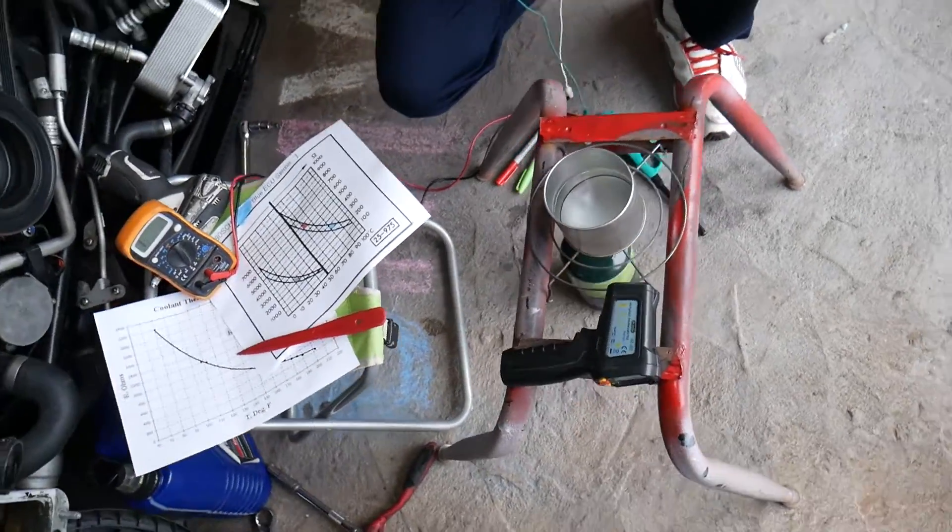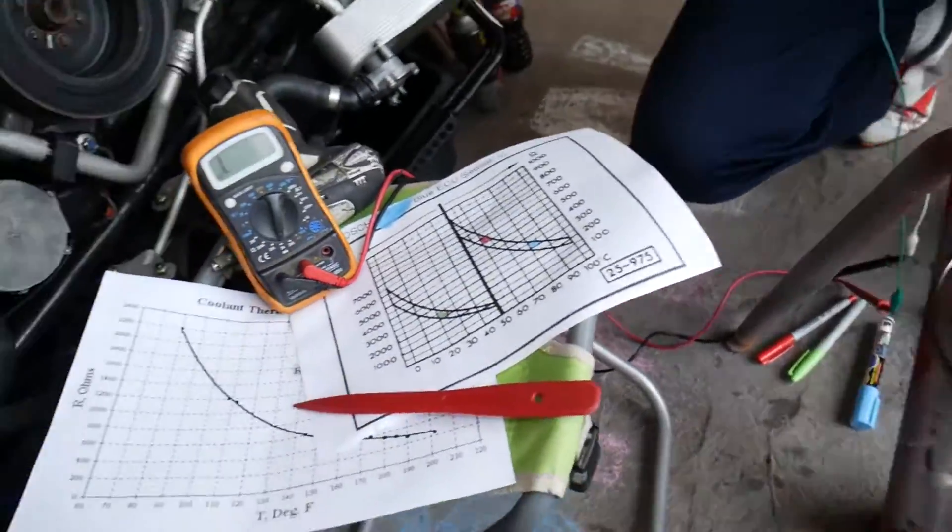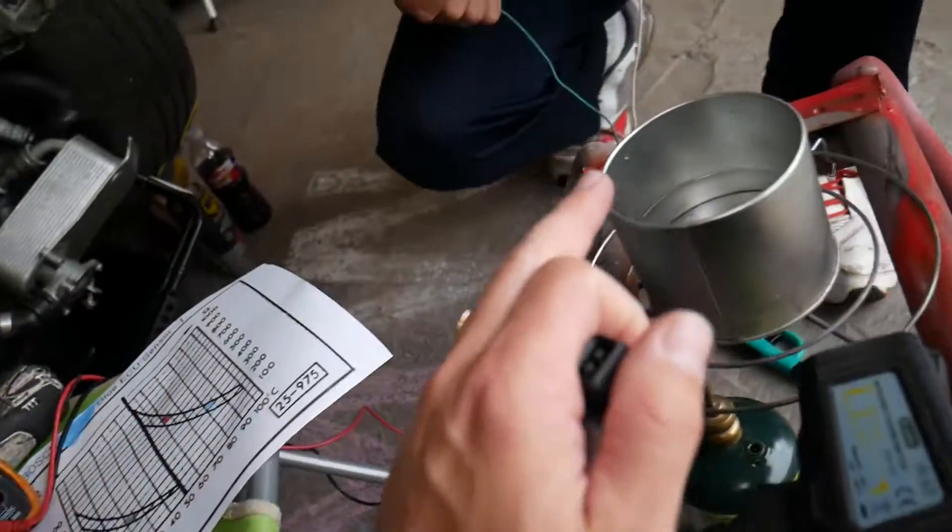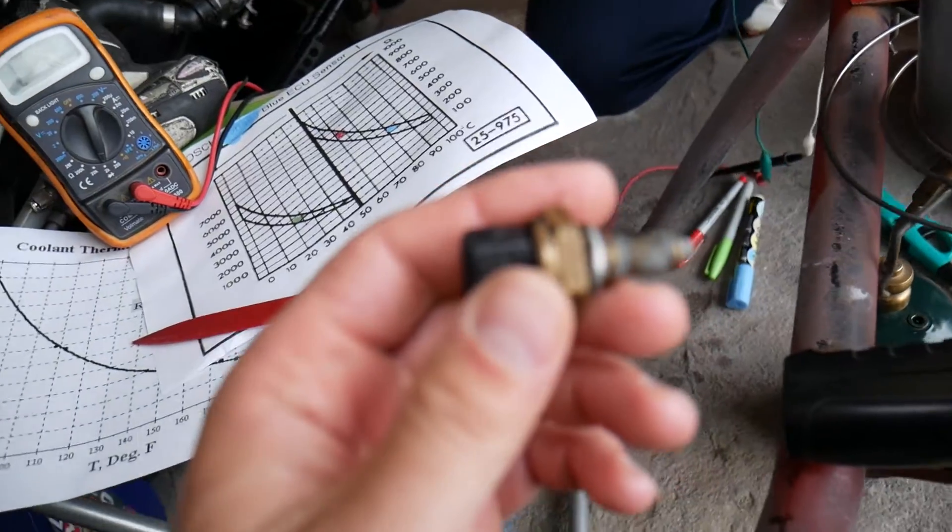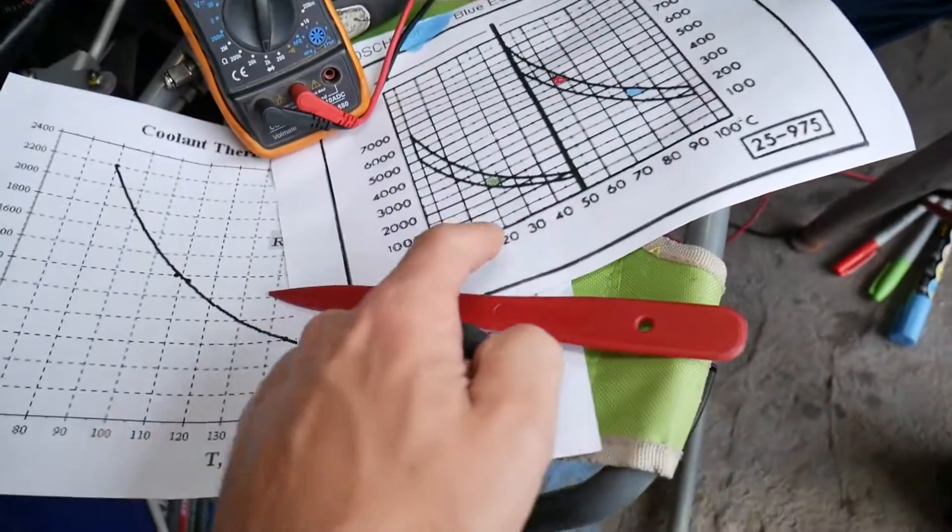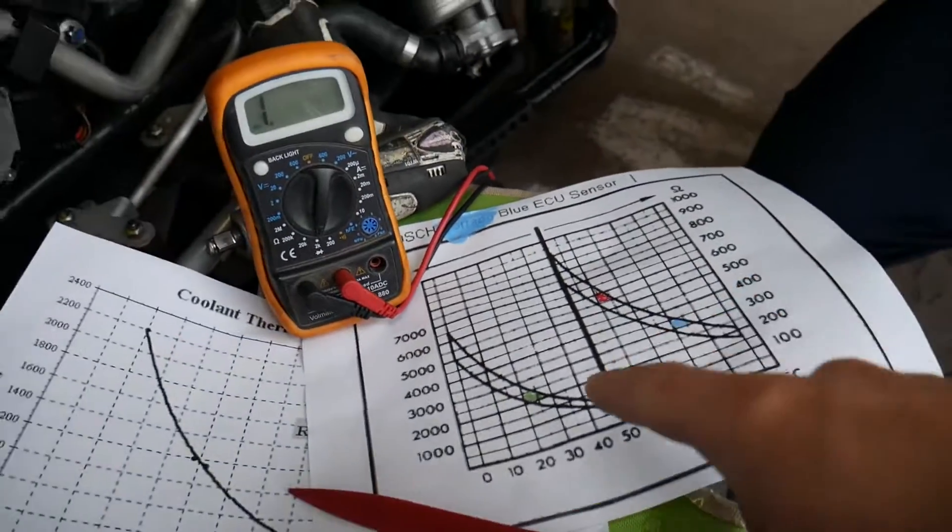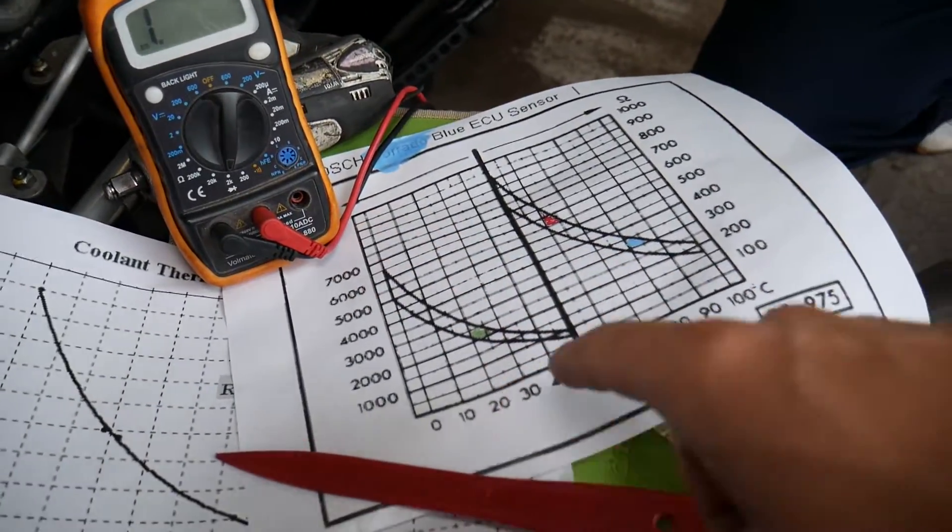What do we need? Voltmeter, we have the graphs here with the readings, we have water, we have the sensor. Now we're going to heat up our water to certain temperatures and we're going to compare the reading from the graph to the reading of our voltmeter and make sure that this sensor is actually working correctly.